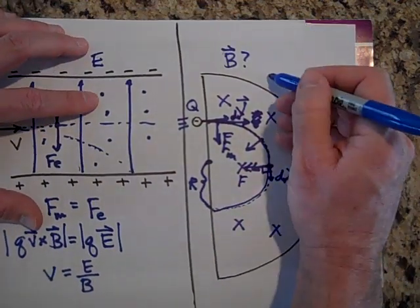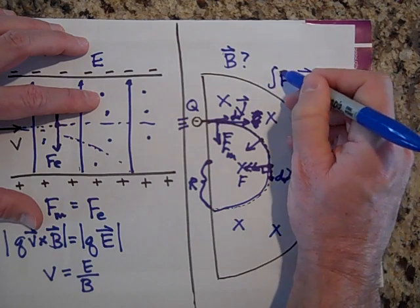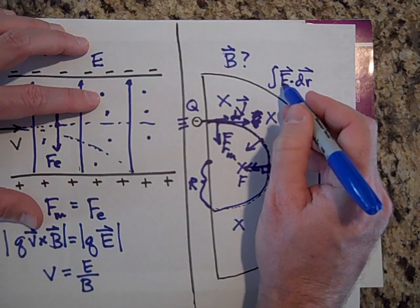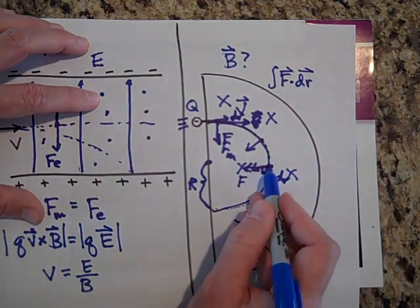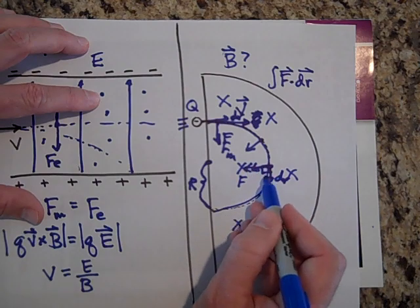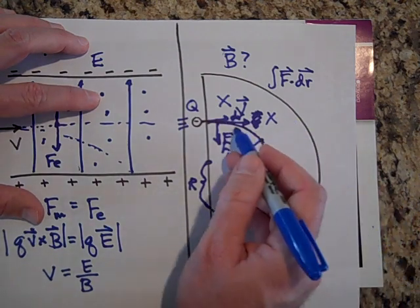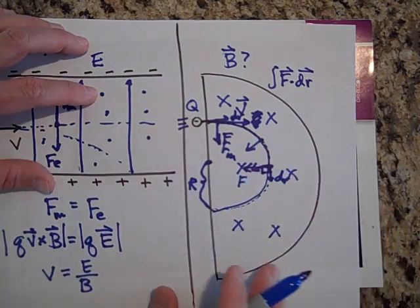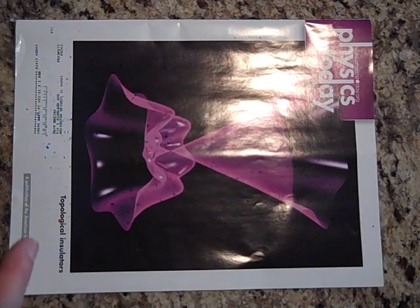So when you do - you know work is the sum of F dot dr's - and the dot product, you take the part of F that's in the direction of dr and multiply it by dr. Well, how much of F is in the direction of dr? And the answer is none of it. It doesn't do work at all. Okay, next one.